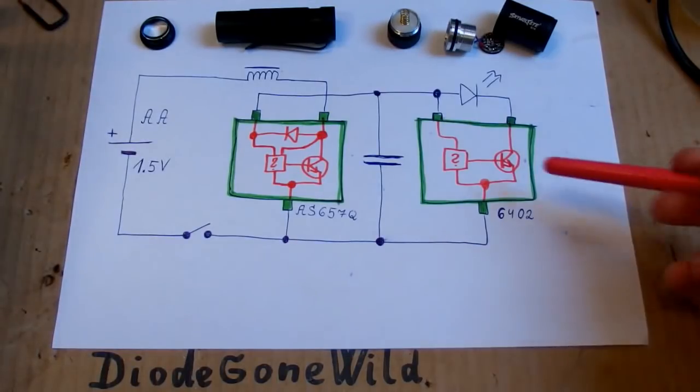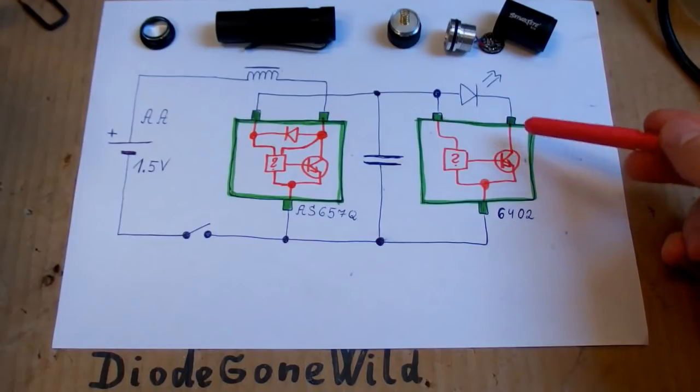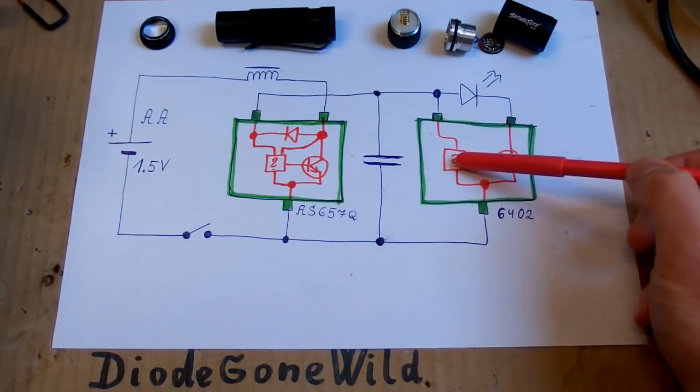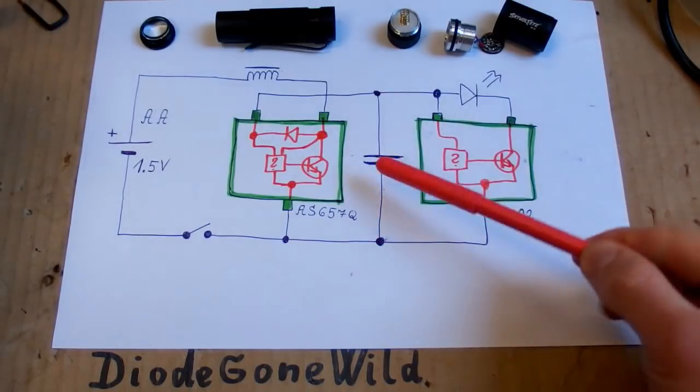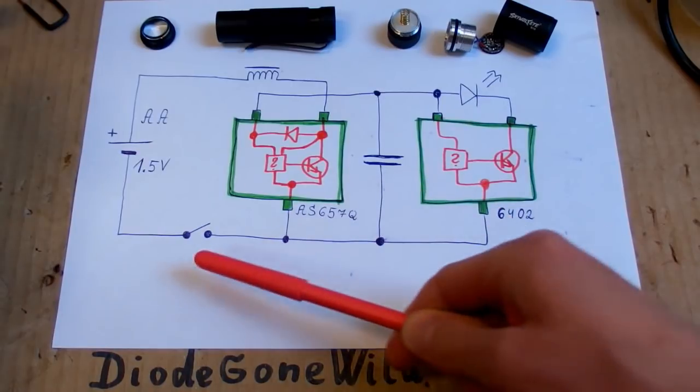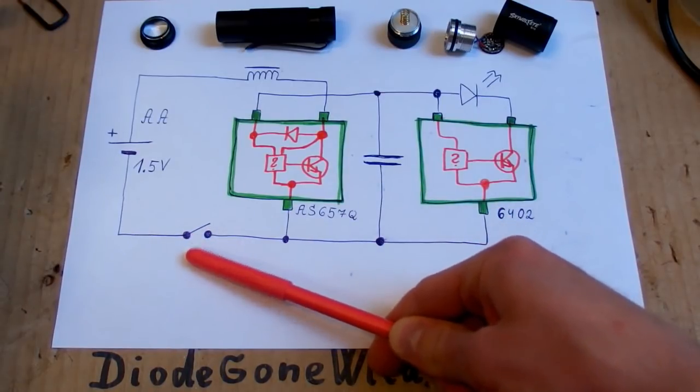The internals of the mode controller probably look like this: there is some switching transistor and some control circuitry. It uses the charge in this capacitor to remember the last state, because it switches the mode when you turn it off and back on.